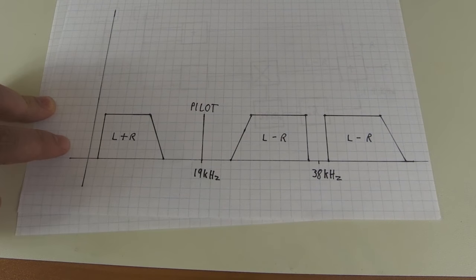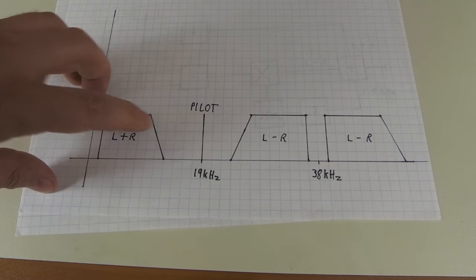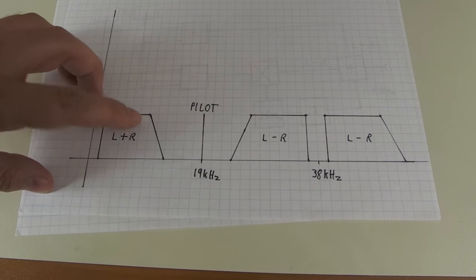This is the audio spectrum of an FM stereo signal. So you see down here in the normal audio range, you have the sum of the left and the right channel.